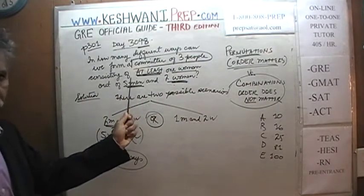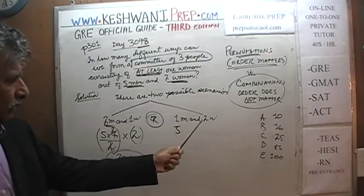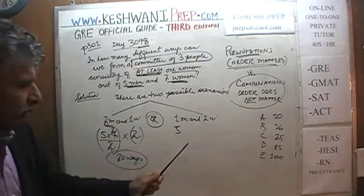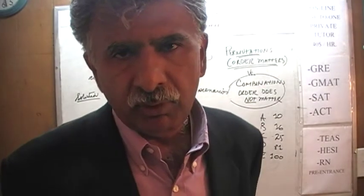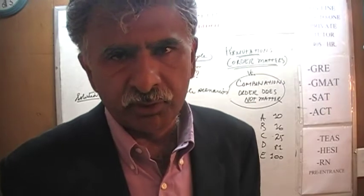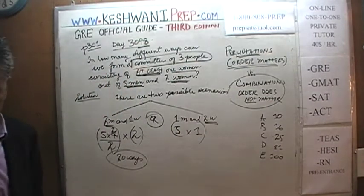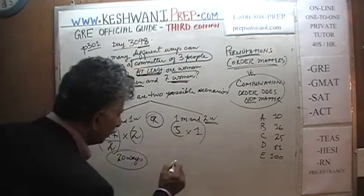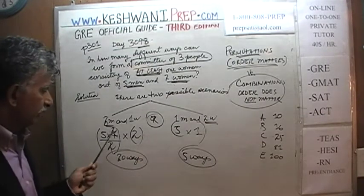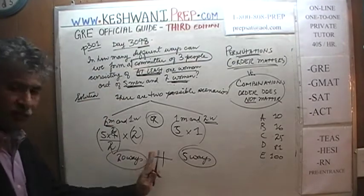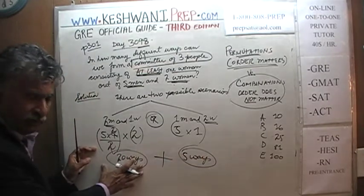How many different ways can we choose one man out of five? Well, there are five men, so there are five ways. There are two women and we want to choose two women. If we want to choose two women out of two women, how many different ways can we do that? There is only one way — obviously take both of them, ask both of them to join the committee. So there are five possibilities here and twenty possibilities there, and we have to add them.